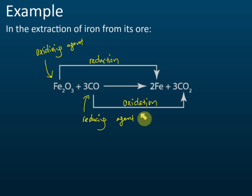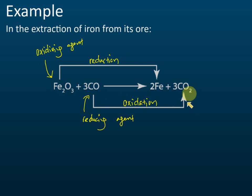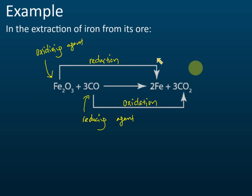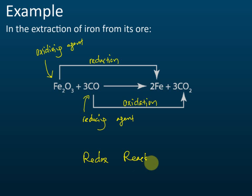So the approach is: first identify which substance undergoes reduction and which undergoes oxidation. Then, the one that undergoes reduction is the oxidizing agent, and the one that undergoes oxidation is the reducing agent. If both oxidation and reduction occur in the same reaction, the reaction is called a redox reaction.